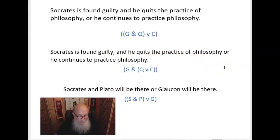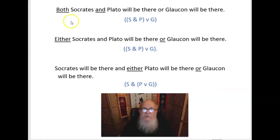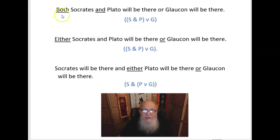Sometimes there are no commas, but grammar can still give us a clue to the correct interpretation. 'Socrates and Plato will be there, or Glaucon will be there' — the Socrates and Plato phrase shares the same verbal phrase 'will be there,' showing them to be a unit: (S and P) or G. We see something similar in 'Both Socrates and Plato will be there, or Glaucon will be there.' The 'both...and' is a coordinate phrase that links those units of meaning together, clearly giving us (S and P) or G.